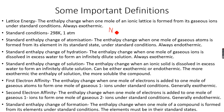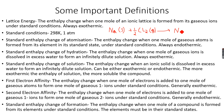For example, the enthalpy change of formation for NaCl: we start with Na(s) — solid, because the standard state of sodium is solid — plus ½Cl₂(g), because in its standard state chlorine exists as Cl₂ diatomic molecules in the gaseous state. This gives us one mole of solid NaCl, which is the ionic compound. The enthalpy change accompanying this reaction is called the standard enthalpy change of formation of NaCl, because one mole of the compound is formed from its elements in their standard states under standard conditions.